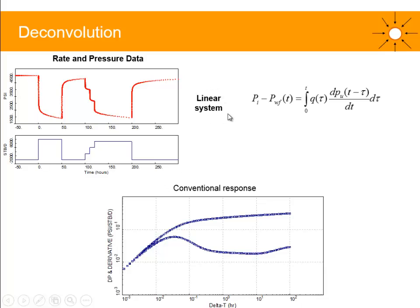In the linear system, we should add the superposition principle, which is characterized by this equation. Initial pressure minus the well-flowing pressure at T is equal to integral of 0 to T of the rate times the derivative of this function PU with respect of time.